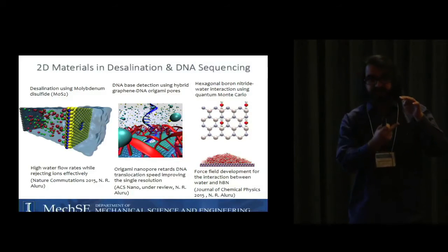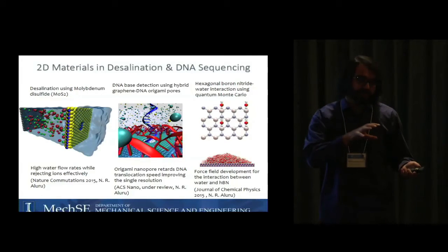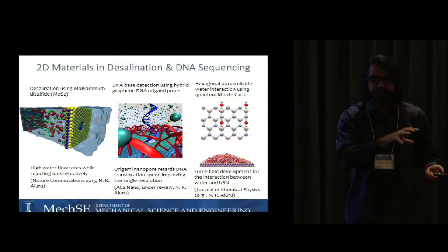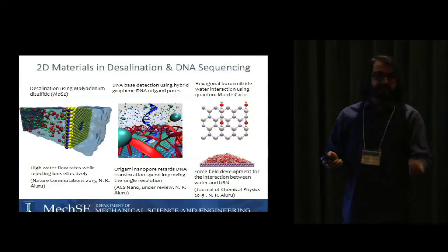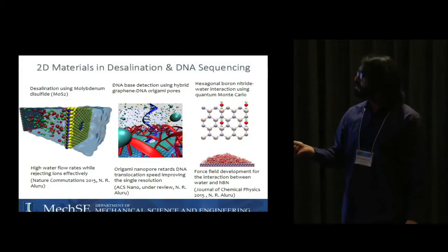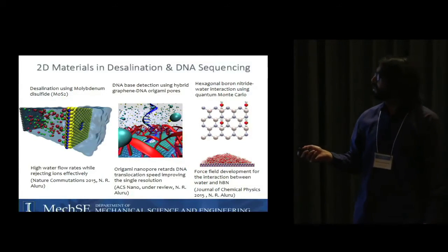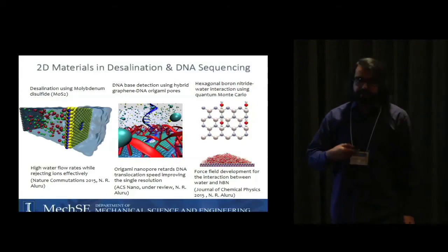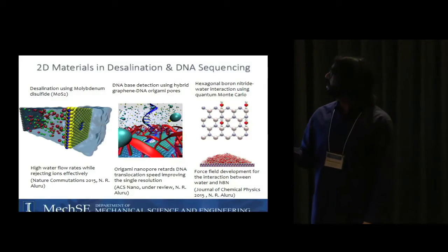One of the big challenges in DNA sequencing is the high speed of DNA translocation through nanopores, because it's really hard to capture in experimental measurements the signal when the DNA is going very quickly through the pore. Here we showed that this nanopore membrane can actually retard the high speed of DNA.